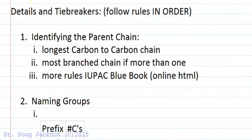The details and tiebreakers must be followed in order. There is a rhythm to this, a method to it, and if we go in order we will get to the right answer. If we go out of order we're going to run into trouble. Number one, we have to identify the parent chain as the longest carbon to carbon chain, and if we have chains that are tied, then the most branched is going to win. We've got to do enough practice to see that, and we'll look at a few examples. There are more tiebreakers than this, but you can find the additional tiebreakers in the IUPAC Blue Book, currently available in an online HTML version.